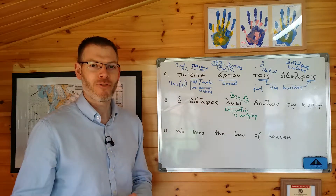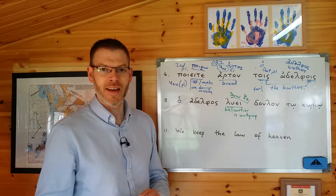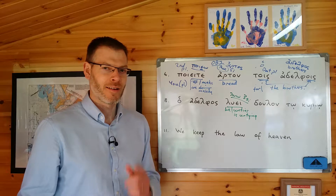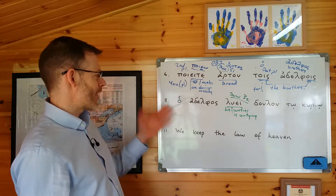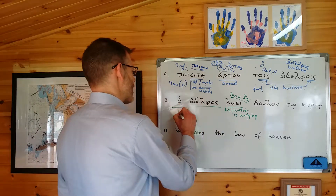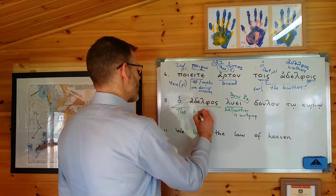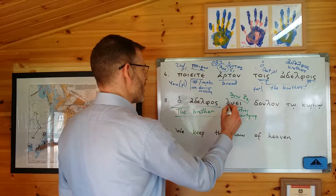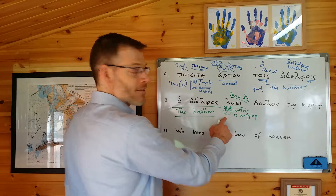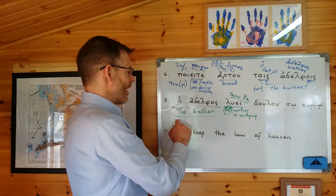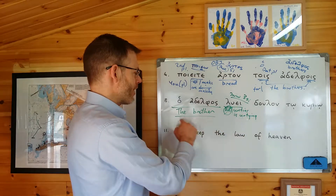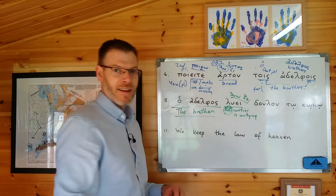So is there anything here in the appropriate case? The appropriate case for the subject of a verb would be the nominative case. Look around here — can you find anything in the nominative case? And of course you certainly can: ho adelphos is in the nominative case — 'the brother.' And therefore that replaces the subject which is built into luei itself. So instead of 'the brother he unties,' we have 'the brother unties' or 'the brother is untying.'